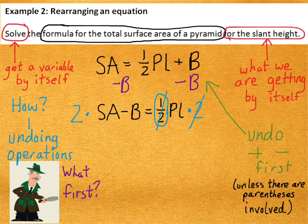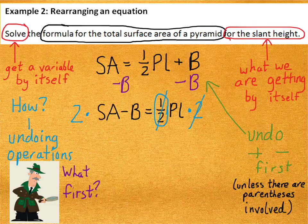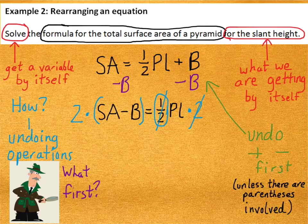Then, on the right side, the 1/2 and the times 2 are going to cancel. Alright? Specifically here, because I need to multiply the entire left side by 2, that means I need to put parentheses around the surface area minus B, because that shows that I'm multiplying all of it.